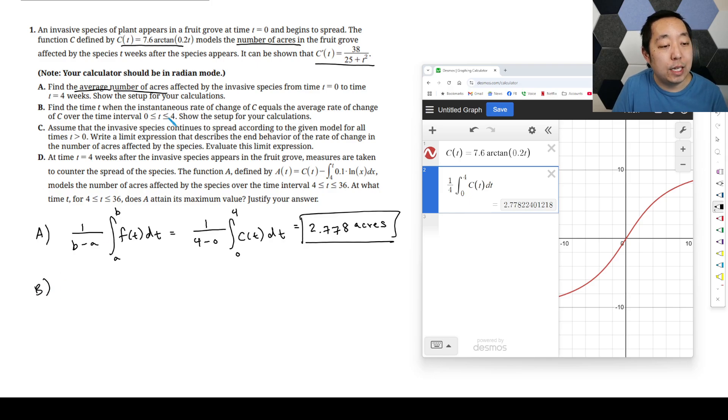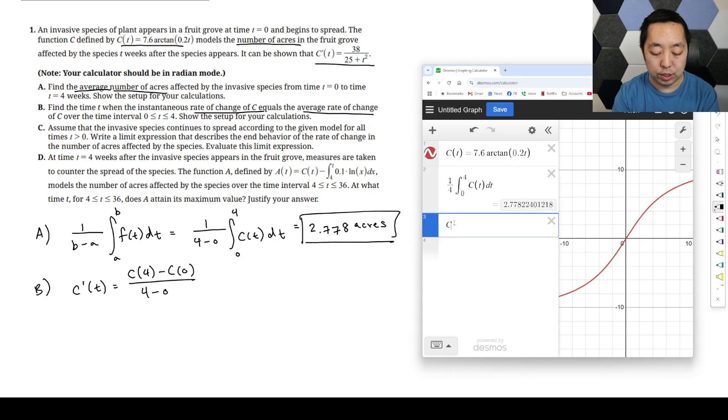Part B: find the time when the instantaneous rate of change equals the average rate of change over the interval. So what's average rate of change? That's where C prime of T, that's the instantaneous rate of change, is going to be equal to the average rate of change. There's a couple of ways you can do this. You can just compute C prime of T. So we're going to plot that, and then we're also going to compute Y equals this fraction.